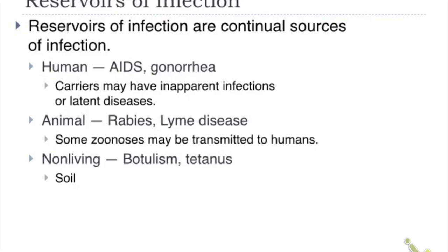Reservoirs of infection are the sources of infections. The most common reservoir is humans — humans are the reservoir of many sexually transmitted infections including AIDS and gonorrhea. Some humans are carriers, meaning they show no signs or symptoms. Animals can also be reservoirs, transmitting zoonoses such as rabies and Lyme disease. Non-living reservoirs include the soil, which can transmit botulism and tetanus.